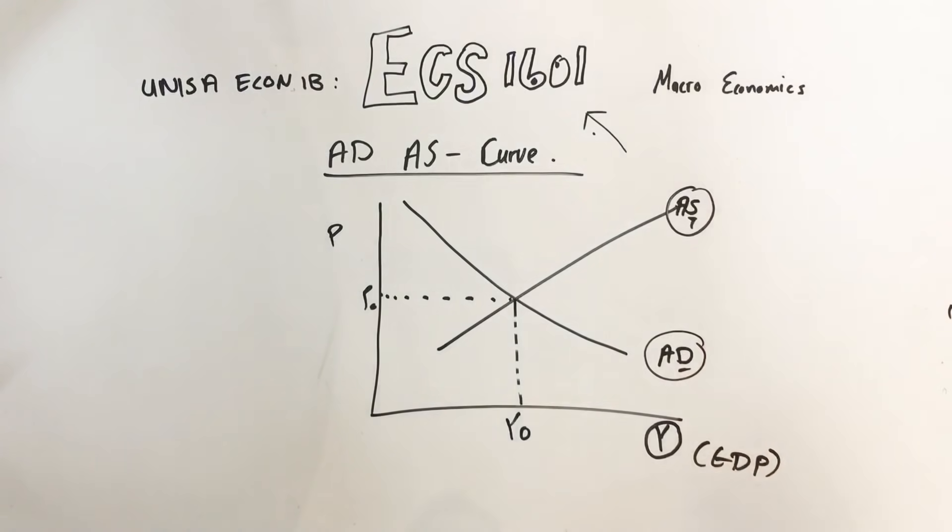If it gets more expensive to produce something, the aggregate supply curve will go that way. If it gets more expensive to produce something or the profit decreases, it goes that way. If it gets cheaper to produce, people will produce more and the aggregate supply will go this way. The aggregate supply curve, only the four production factors can move that one.